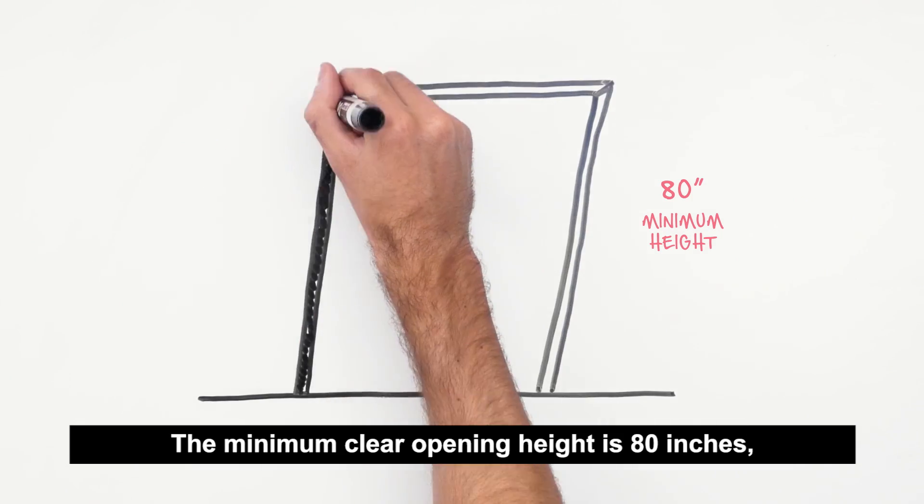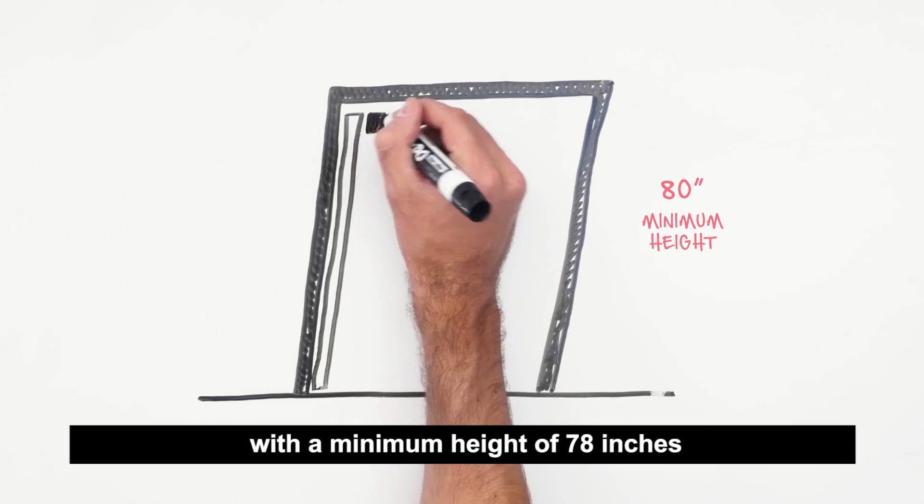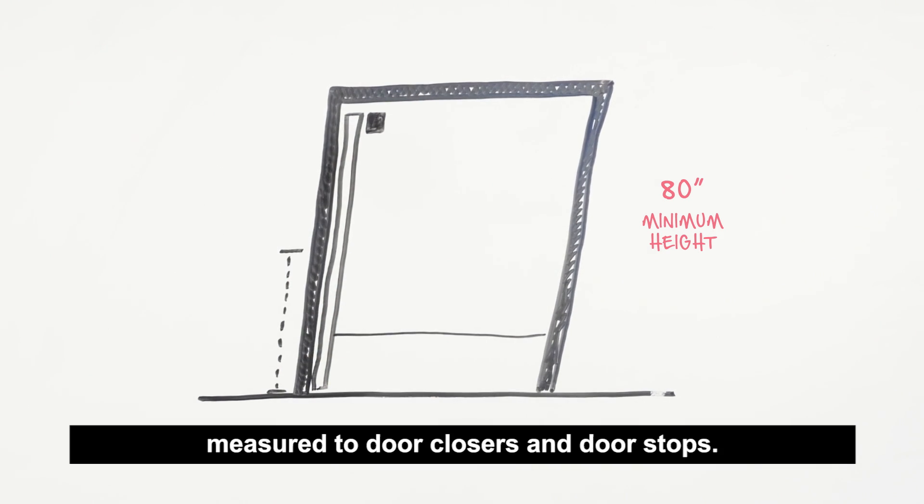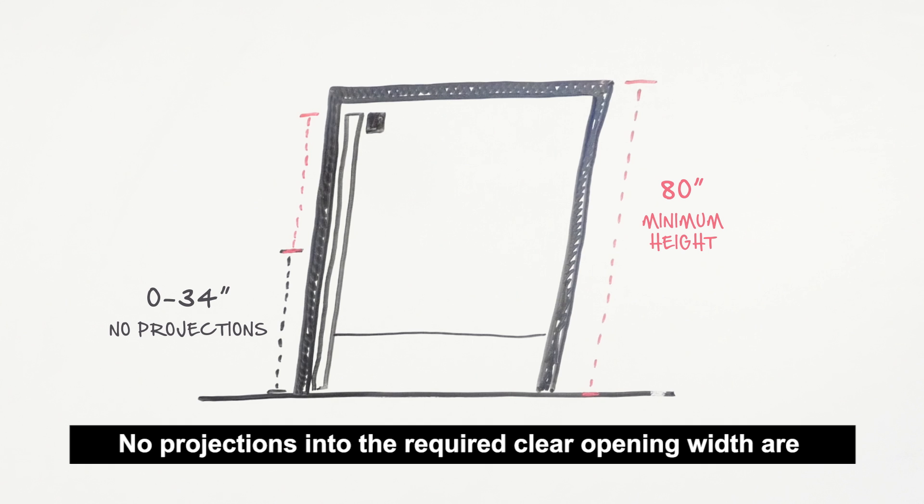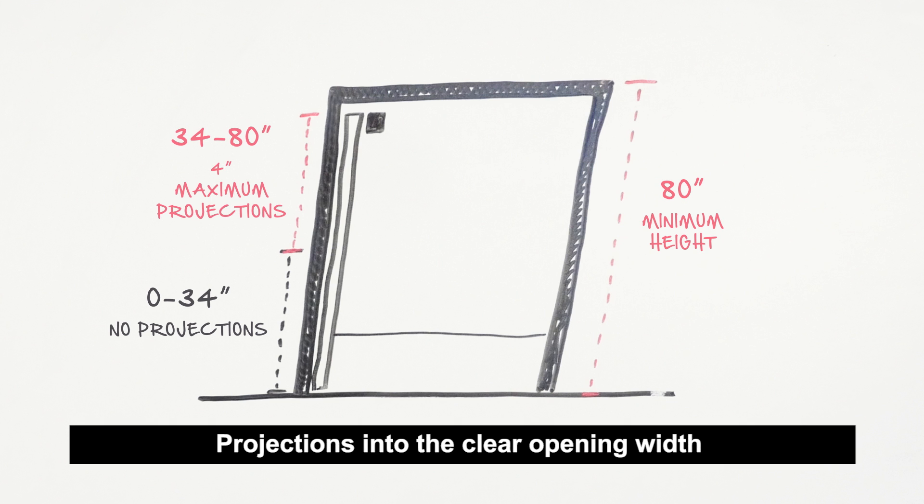The minimum clear opening height is 80 inches, with a minimum height of 78 inches measured to door closers and door stops. No projections into the required clear opening width are allowed below 34 inches above the finished floor or ground. Projections into the clear opening width above 34 inches are limited to 4 inches.